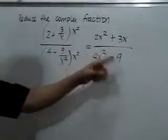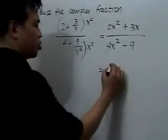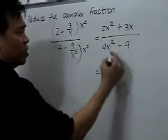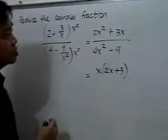If we inspect this numerator here, you will see that there's a common factor, which is x. So, if you factor out x, that will leave us with 2x in the first term, and positive 3 in the second term.